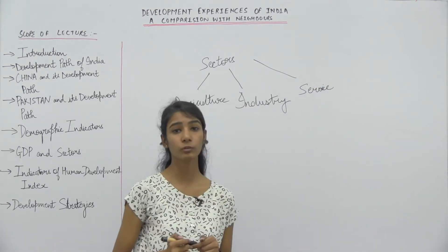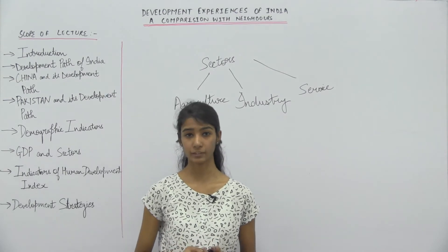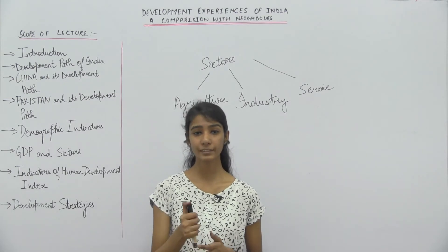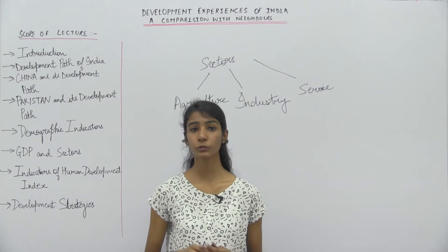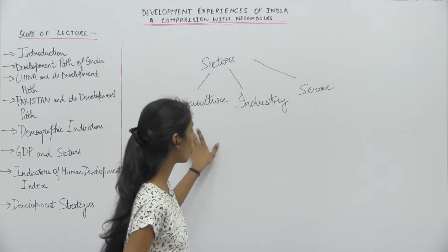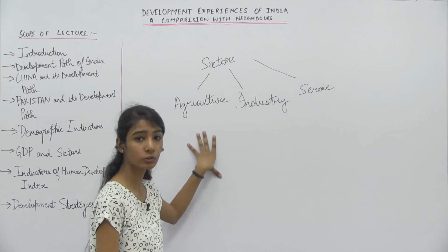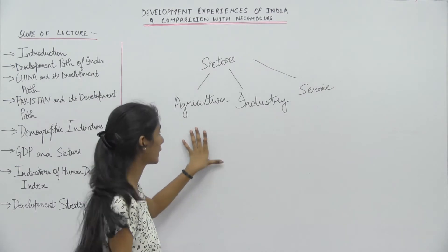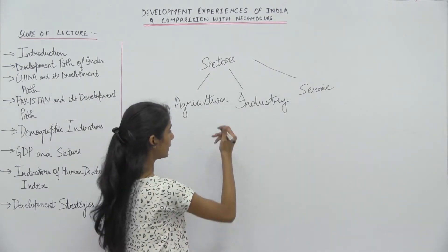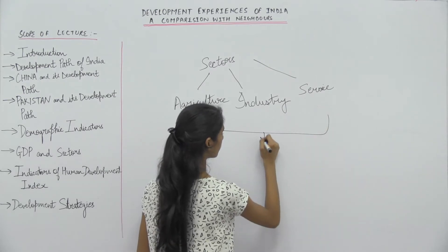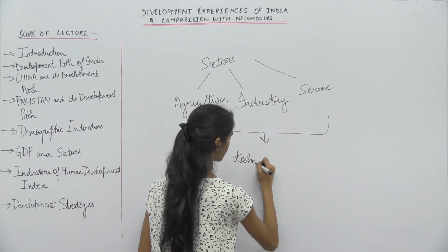We know that the world has changed tremendously over the last two decades. This economic growth has been made possible due to technological advancement in all three sectors — agriculture, industry, and service. Economic growth is possible in these three sectors due to technological advancement.